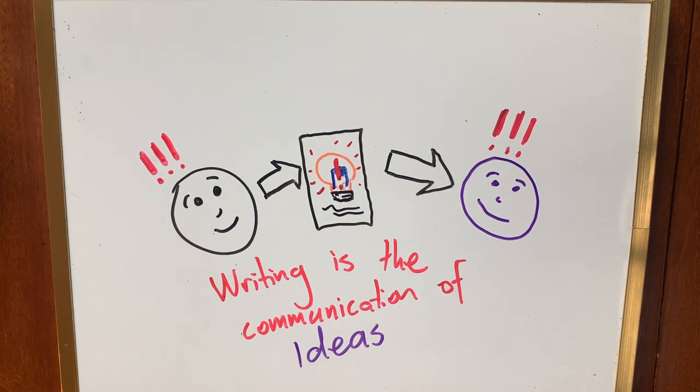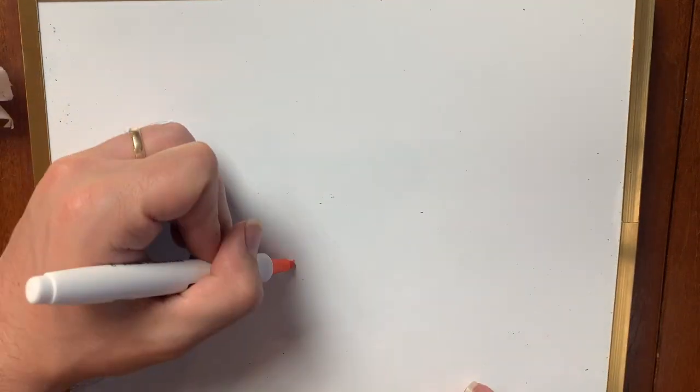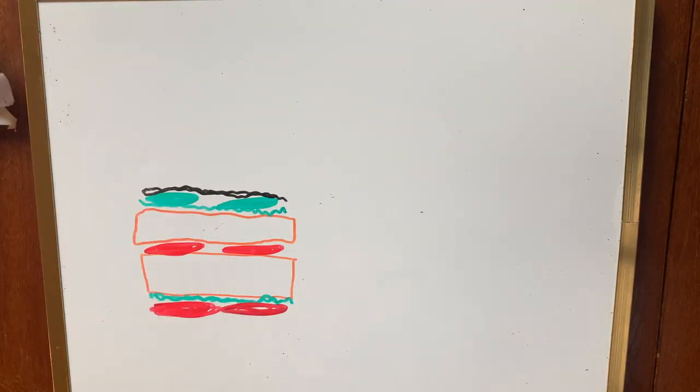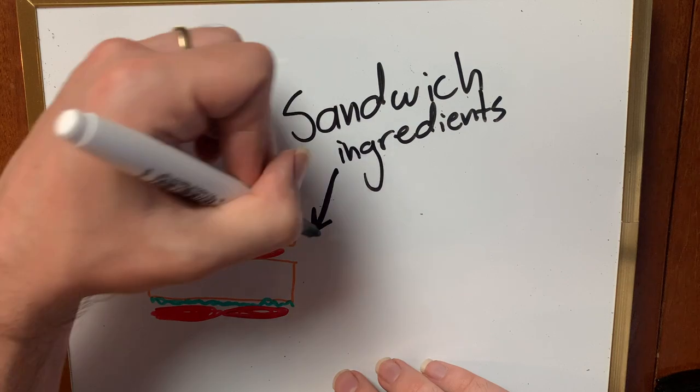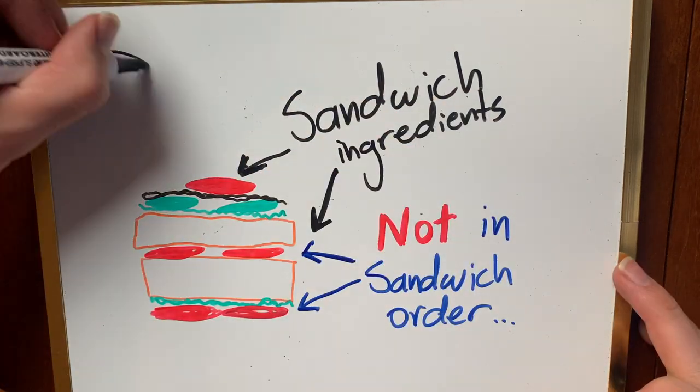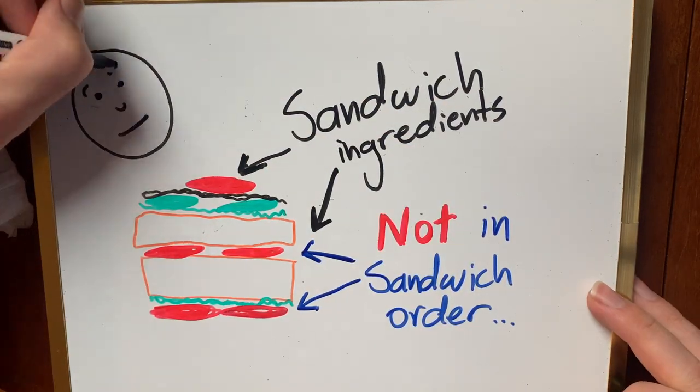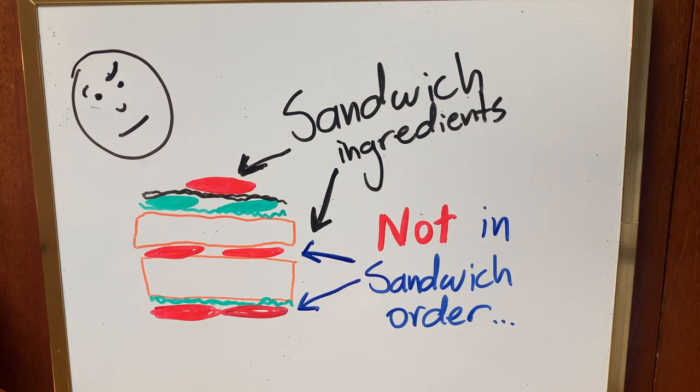You could have the exact same information, the same ideas, but if they're not organized well, it's a bit like a sandwich where all the ingredients are out of whack and you end up with bread on the inside and ingredients on the outside and it doesn't make sense and it's hard to get a hold of.